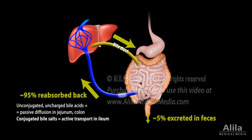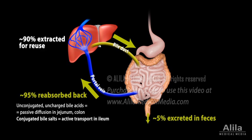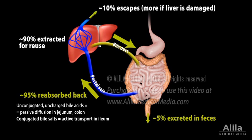Intestinal cells — enterocytes — send the reabsorbed bile acids back to the liver via the portal vein. In the liver, most of the bile acids are extracted from the hepatic circulation for reuse. Only a small portion escapes to the systemic circulation. Thus, bile acids can be recycled many times a day between hepatocytes in the liver and enterocytes in the intestine. This recycling circuit is known as enterohepatic circulation, or recirculation.